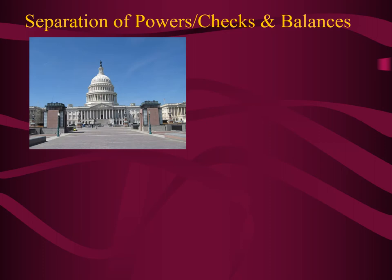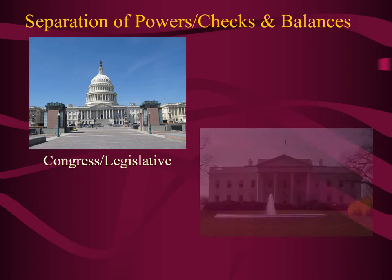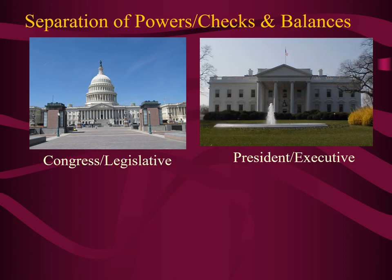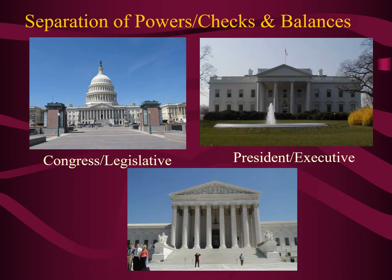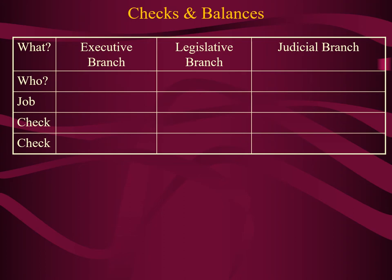As many of you are probably aware, we have three branches in the United States government. On the upper left, we see the legislative branch, which is made up of Congress. On the upper right, we see the executive branch, where the president lives and works in the White House. And in the bottom center, we have the judiciary, or the Supreme Court building.